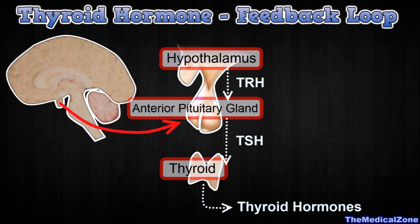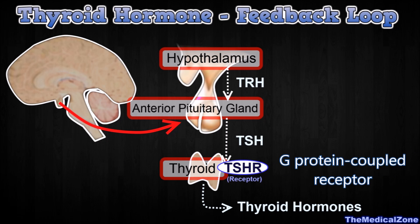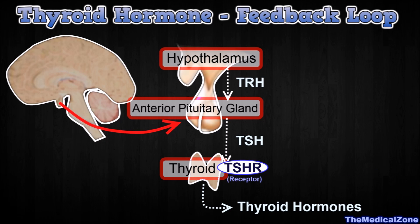TSH binds to the TSH receptor which is located on thyroid cells. The TSH receptor is a member of the G-protein-coupled receptor superfamily, which means that it is integrated in the cell membrane of the thyroid and stimulates intracellular activity.